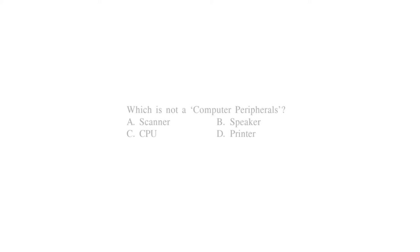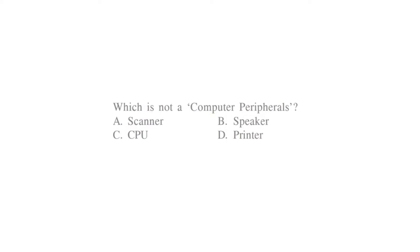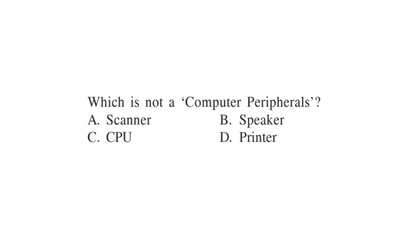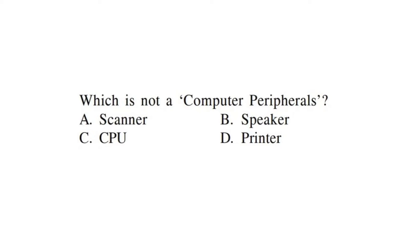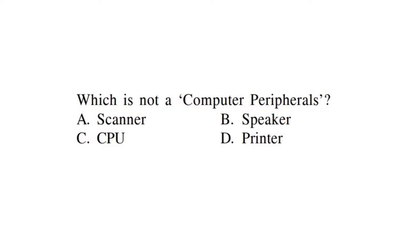Which of the following is not a computer peripheral? Scanner — yes, it is a peripheral. Speaker — yes. Printer — yes. CPU — the CPU, or central processing unit, is not a computer peripheral. The right answer will be C.